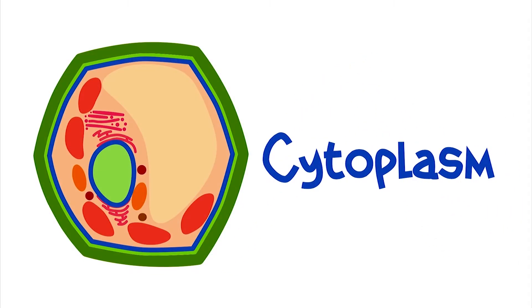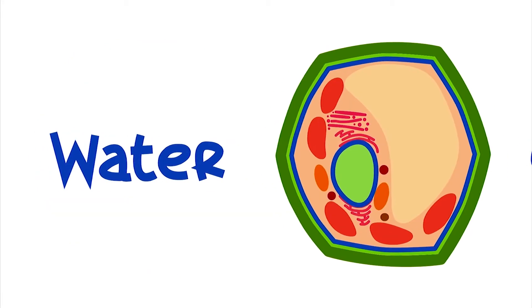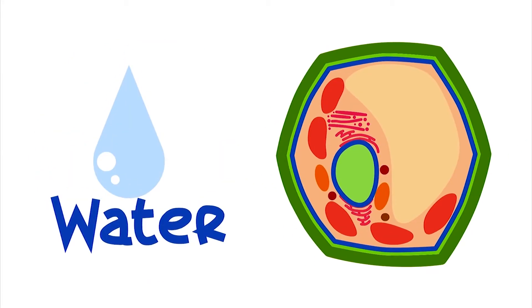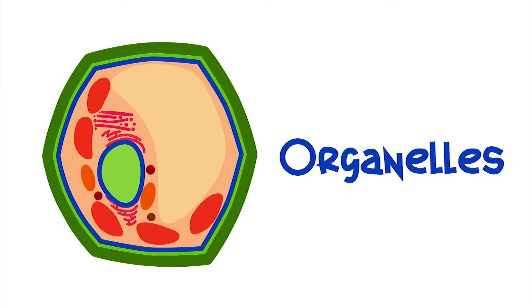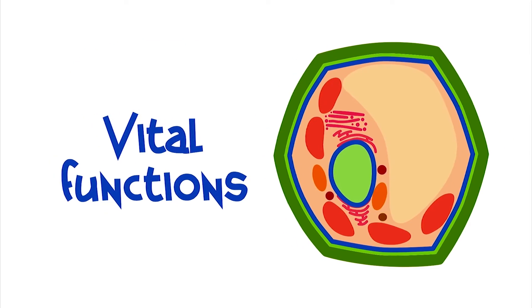The cytoplasm is formed mainly by water, and in it are located structures called organelles. They are of different types and are responsible for the vital functions of cells.